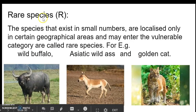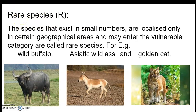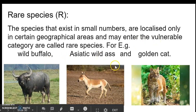After this, there are rare species. Rare species are those not available in plenty — they exist only in very small numbers and can be found only in particular geographic areas. Examples of rare species include wild buffalo, Asiatic wild ass, and golden cat.